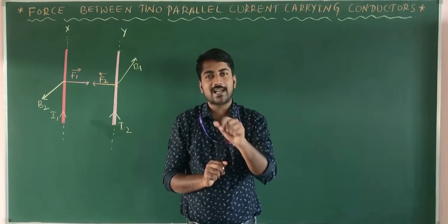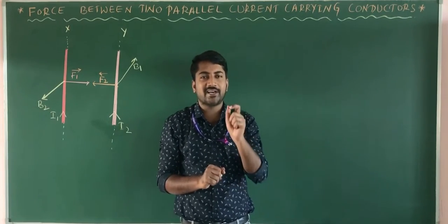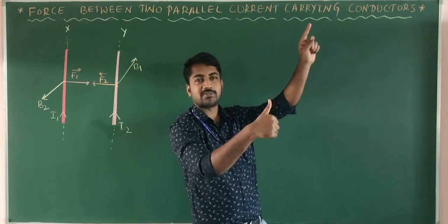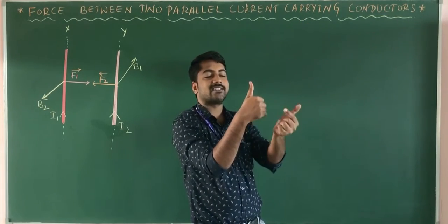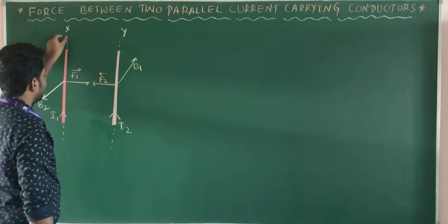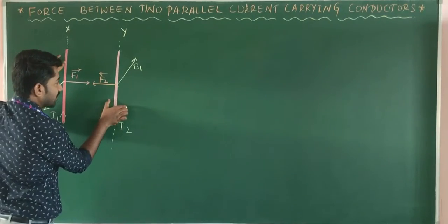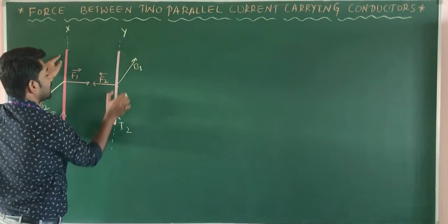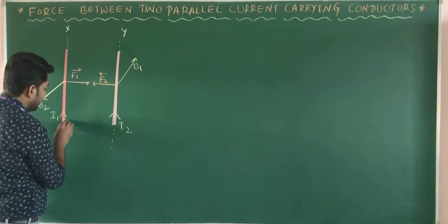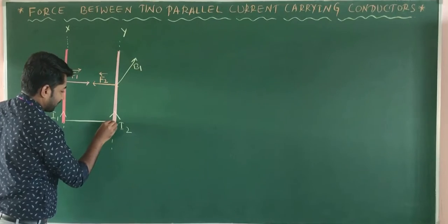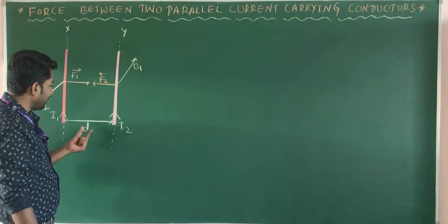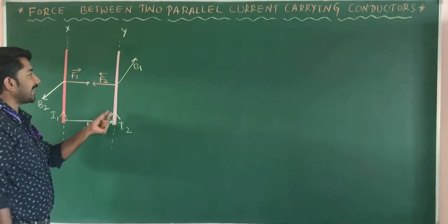According to the right-hand thumb rule: if a straight current-carrying conductor is enclosed by the right hand, the thumb indicates the direction of current and the other fingers indicate the direction of the magnetic field. When current flows in conductor X, the magnetic field B1 is produced at conductor Y. When current flows in conductor Y, the magnetic field B2 is produced at conductor X. The distance between the two parallel conductors is D.